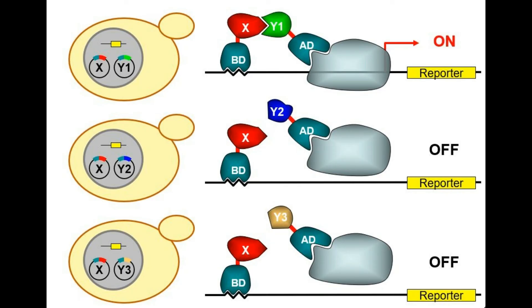The main drawbacks of this technique are that if you have an auto-activating bait protein X, which can auto-activate the particular transcription machinery, then your system cannot be tested for interaction because your gene will be expressed regardless. Also, if there is a high rate of false positivity, you need to test whether your system is actually working as it should.